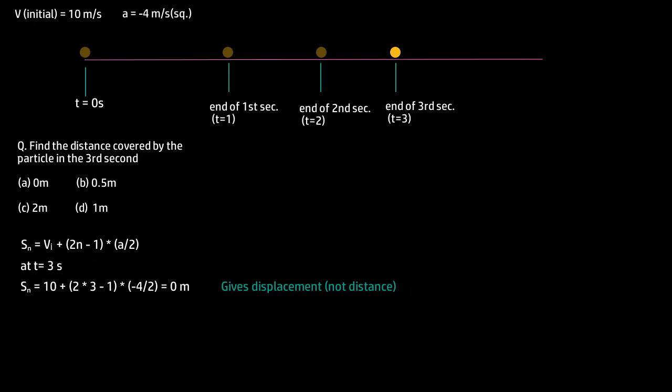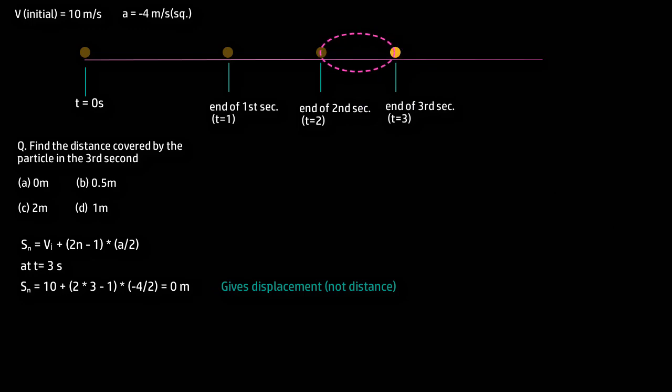If the question had asked for the displacement in the 3rd second, then the answer would be 0 meters. But let us examine what exactly happened in the 3rd second: the particle moved forward from here to here and then returned here, giving a displacement of 0. This is possible only if the velocity became 0 at some point during the 3rd second and the particle started its reverse journey.